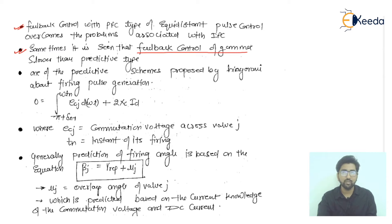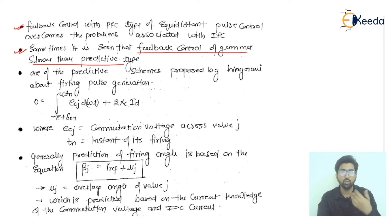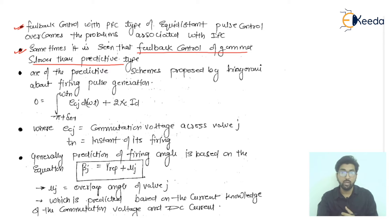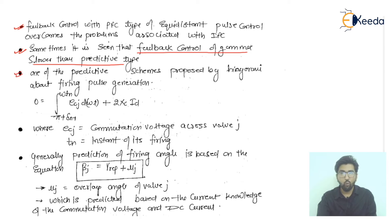Sometimes it is seen that the feedback control of gamma — the extinction angle — is slower than the predictive type. The predictive type has a more advanced and faster response.